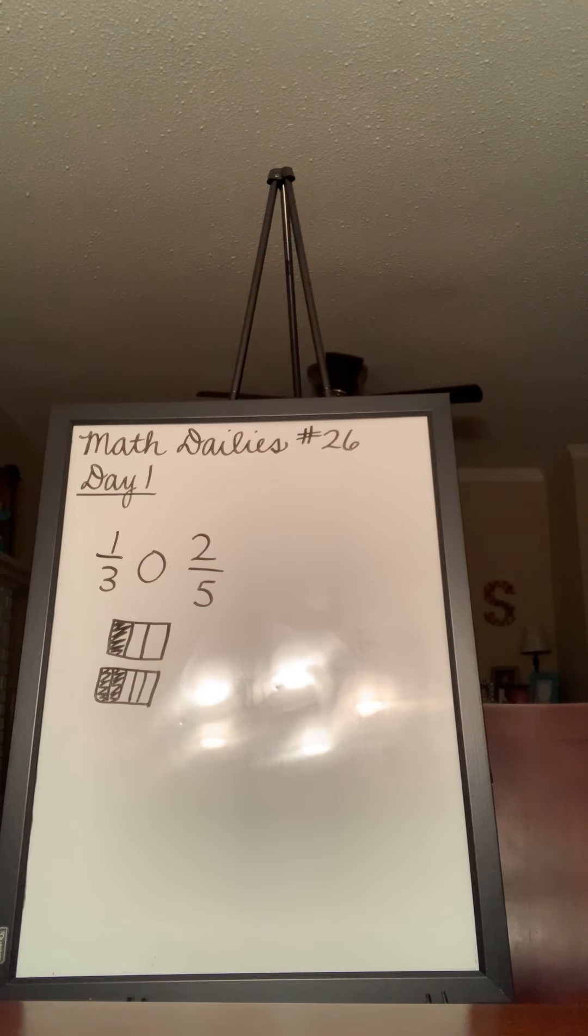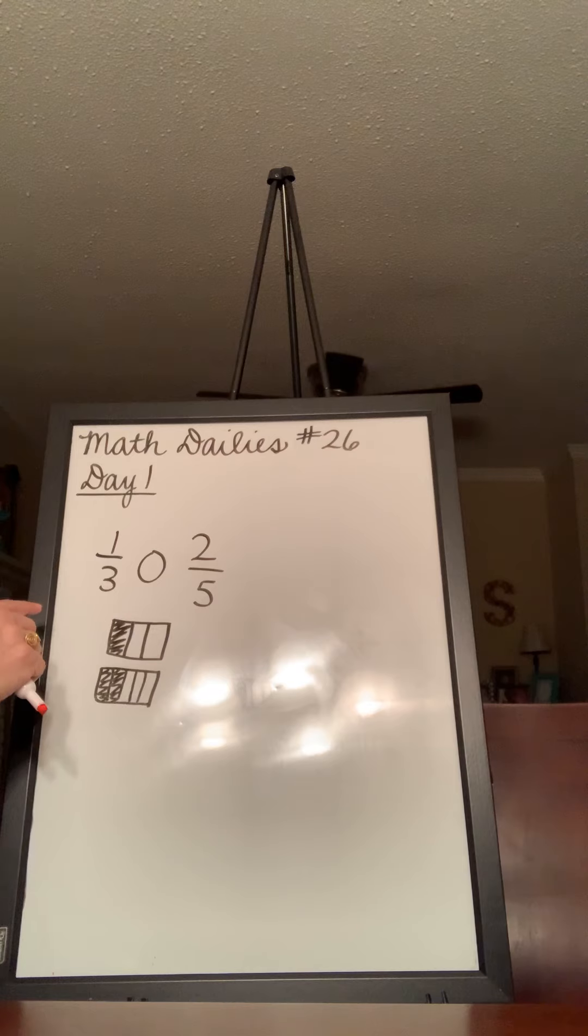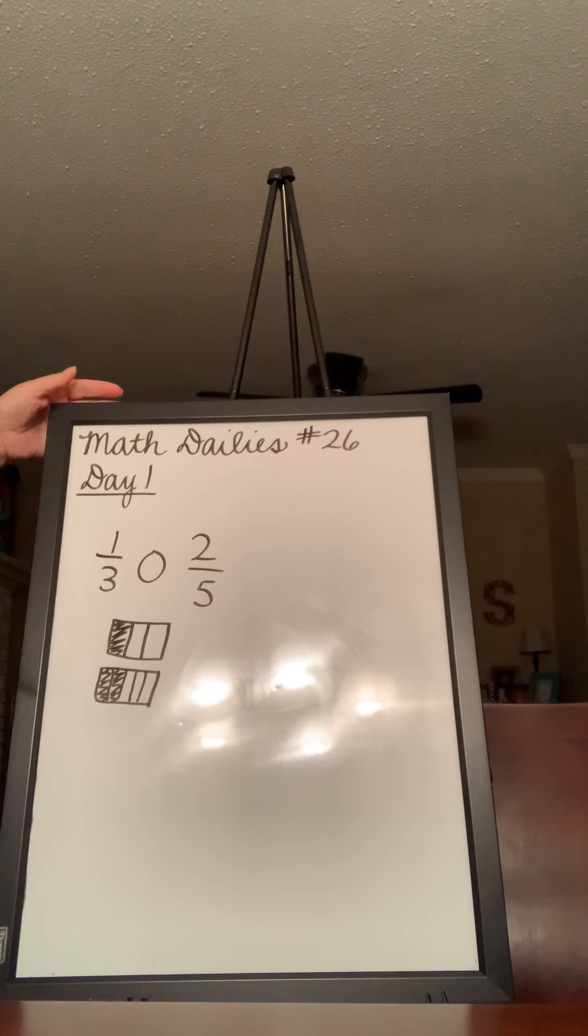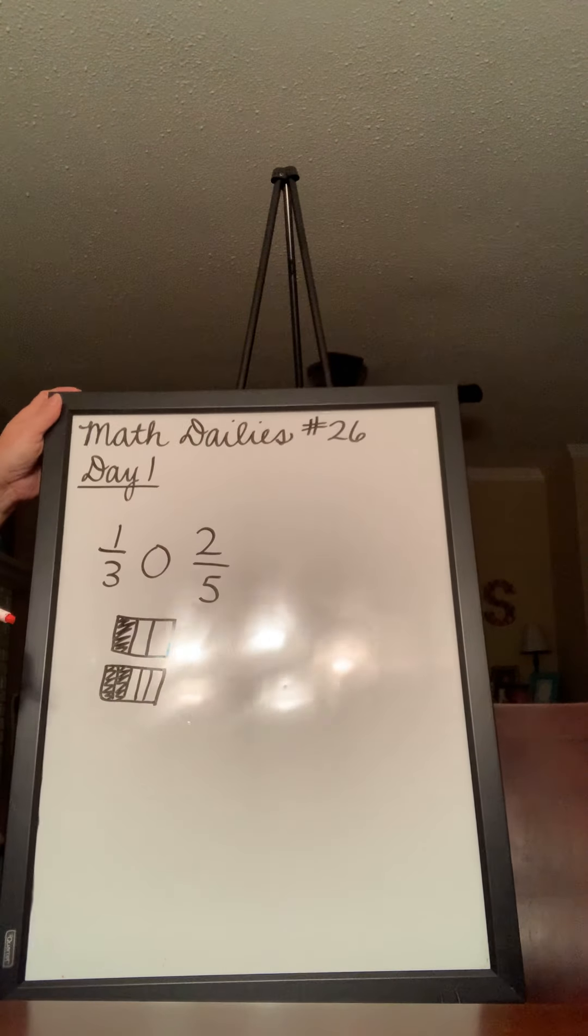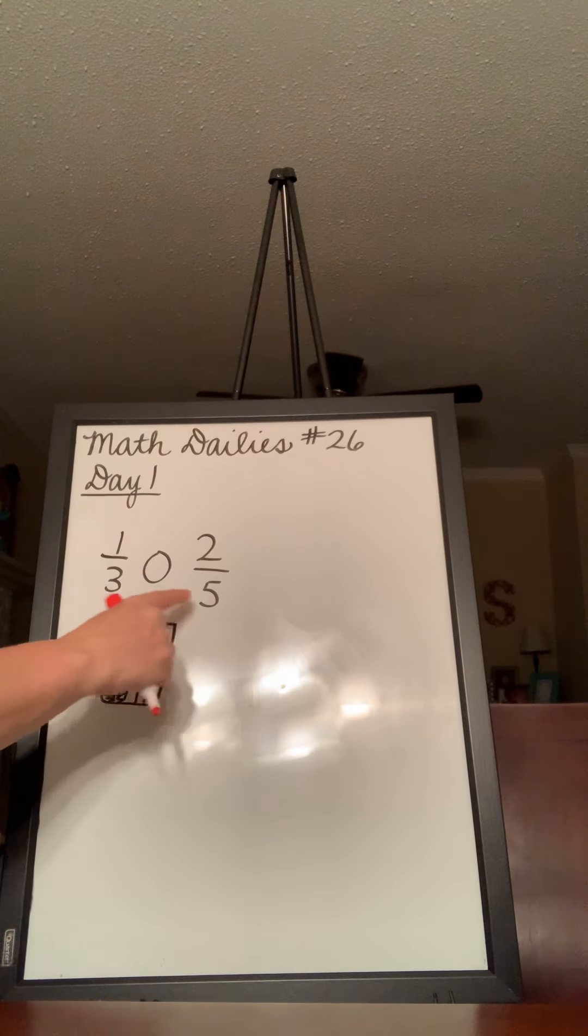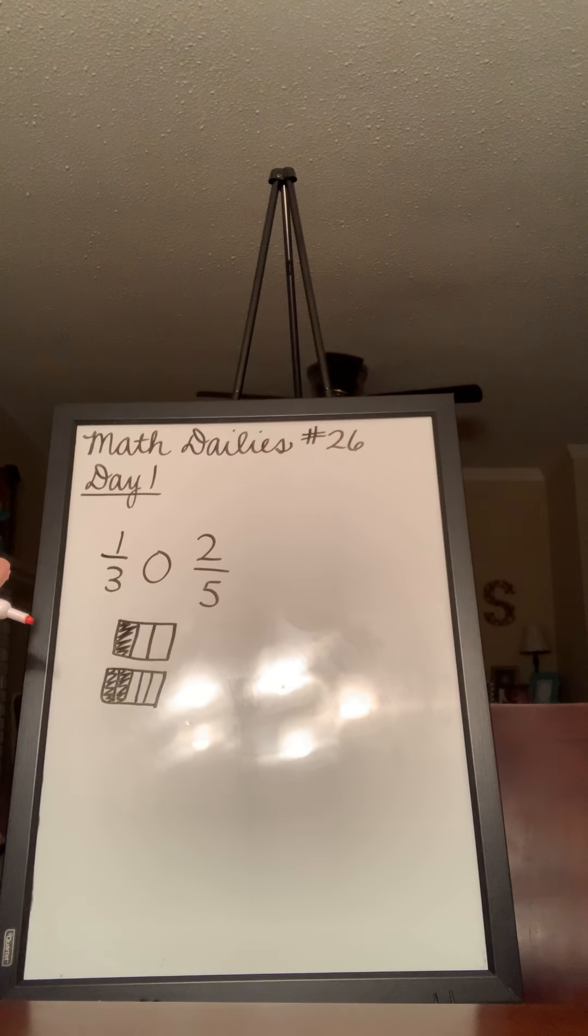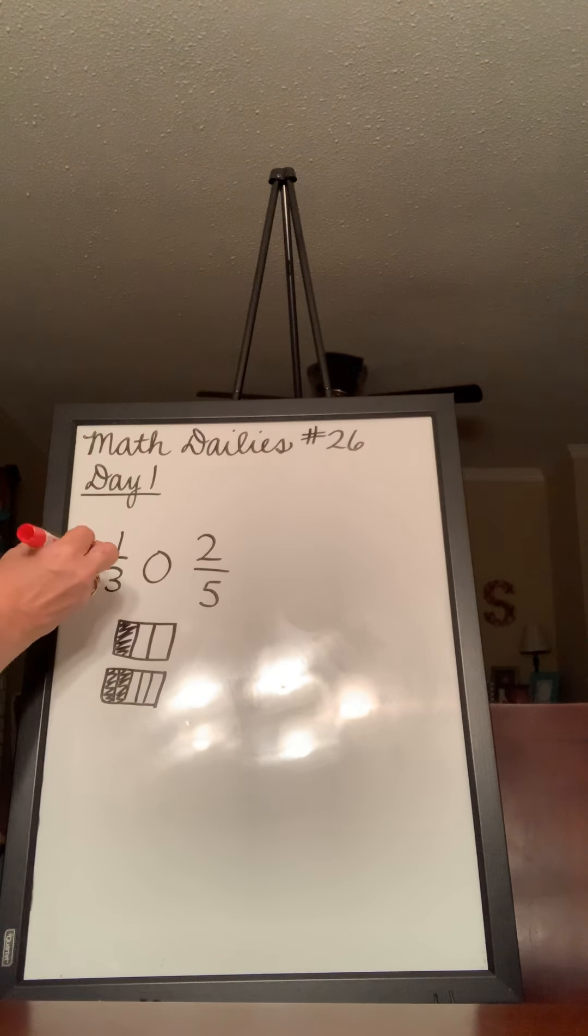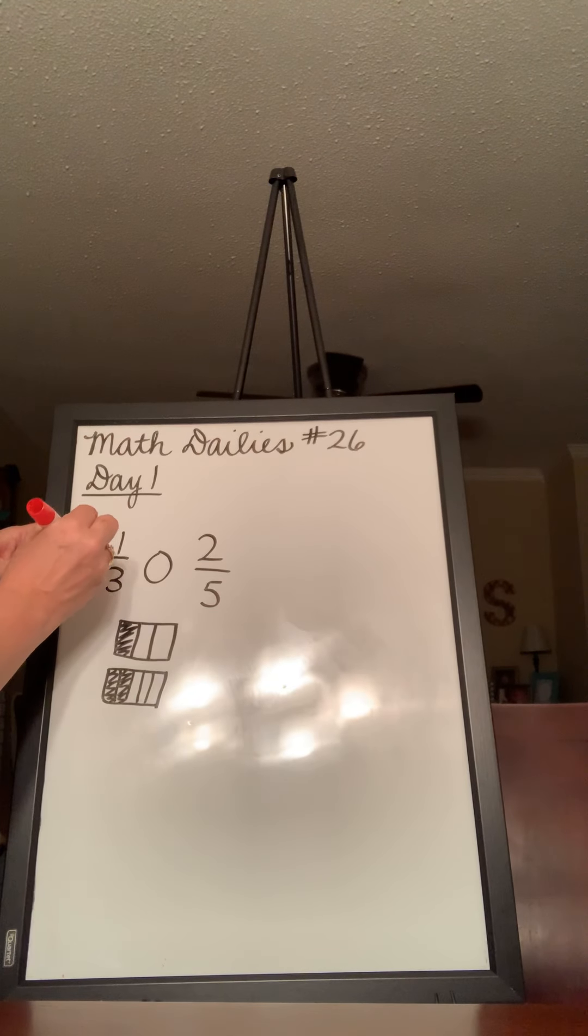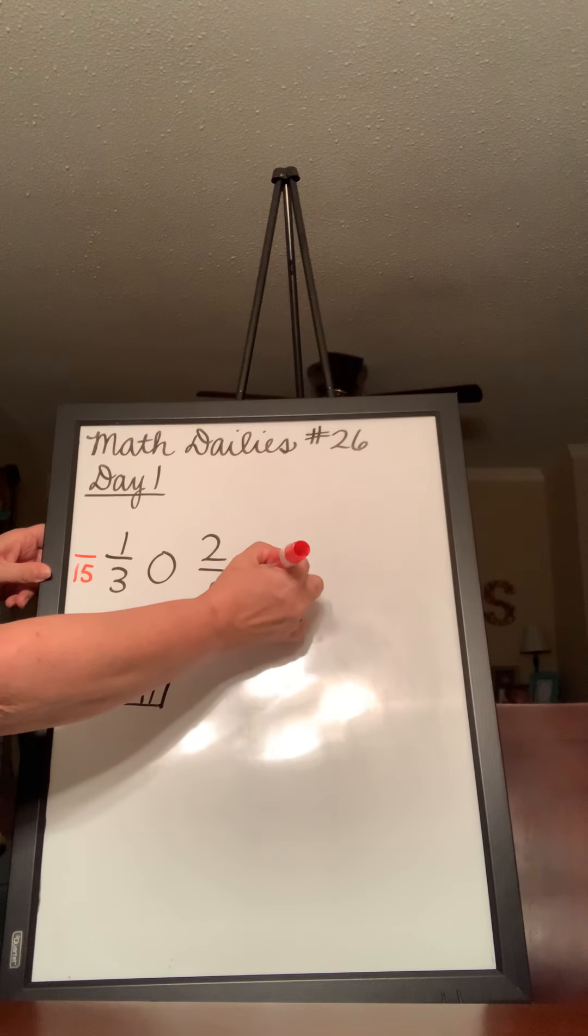We need to make these both into fractions that can have the same denominator because right now we have thirds and fifths and we can't really compare those two very easily. We need to change it to a denominator that we can compare with each other. So, we know that 3 times 5 is 15, so both of these should be able to be changed to 15ths. I'm going to go ahead and write 15ths next to it.